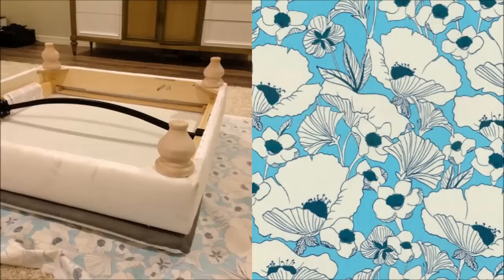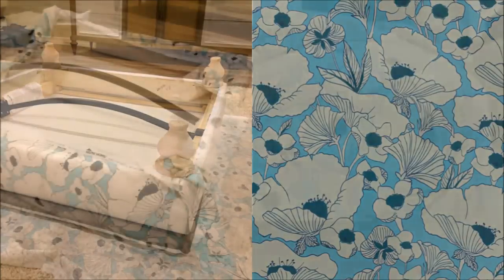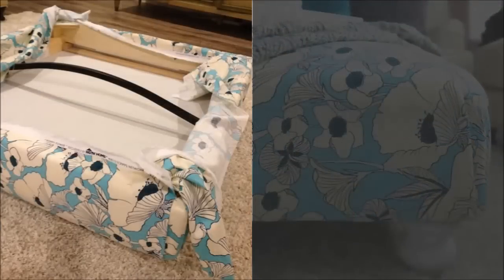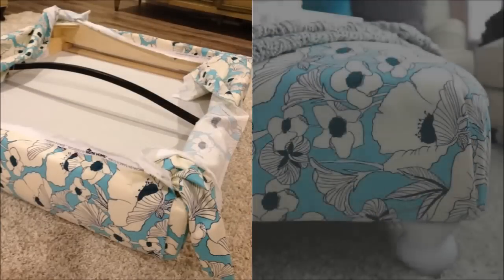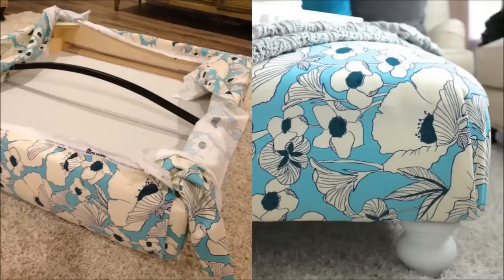In this project, blogger Rebecca used Poppy Power fabric from HGTV. Lay the fabric out, flip the ottoman over, stretch and staple the fabric to the underside of the ottoman. And here it is! A perfectly neat ottoman!